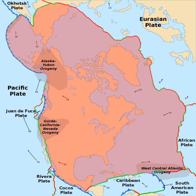A few hotspots are thought to exist below the North American Plate. The most notable hotspots are the Yellowstone, Wyoming, Jemez Lineament, and Anahim hotspots. These are thought to be caused by a narrow stream of hot mantle convecting up from the Earth's core-mantle boundary, called a mantle plume, although some geologists think that upper mantle convection is a more likely cause.